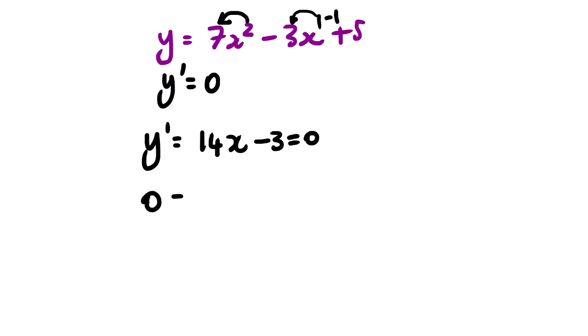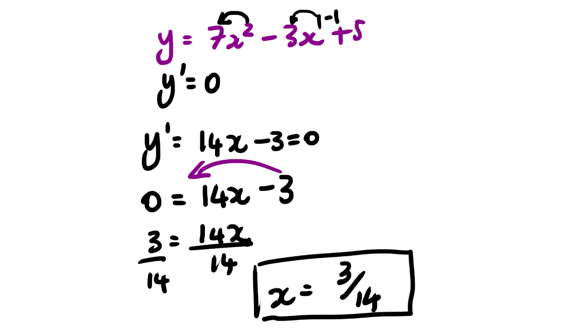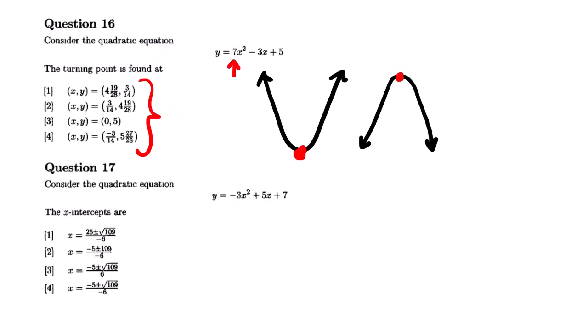Having our first derivative equation, we solve for x to find the x-coordinate of the turning point. So we transpose: 3 equals 14x, then divide both sides by 14. Our x equals 3 over 14. So this is the x-coordinate of the turning point.